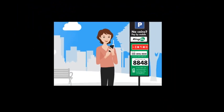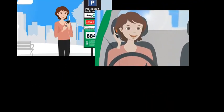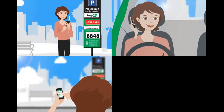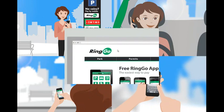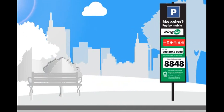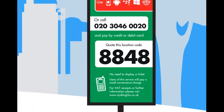You can use RingGo by app, calling, mobile phone, text, and internet. Then provide two more details: the location code where you parked, here it's 8848, and the time you want to stay.